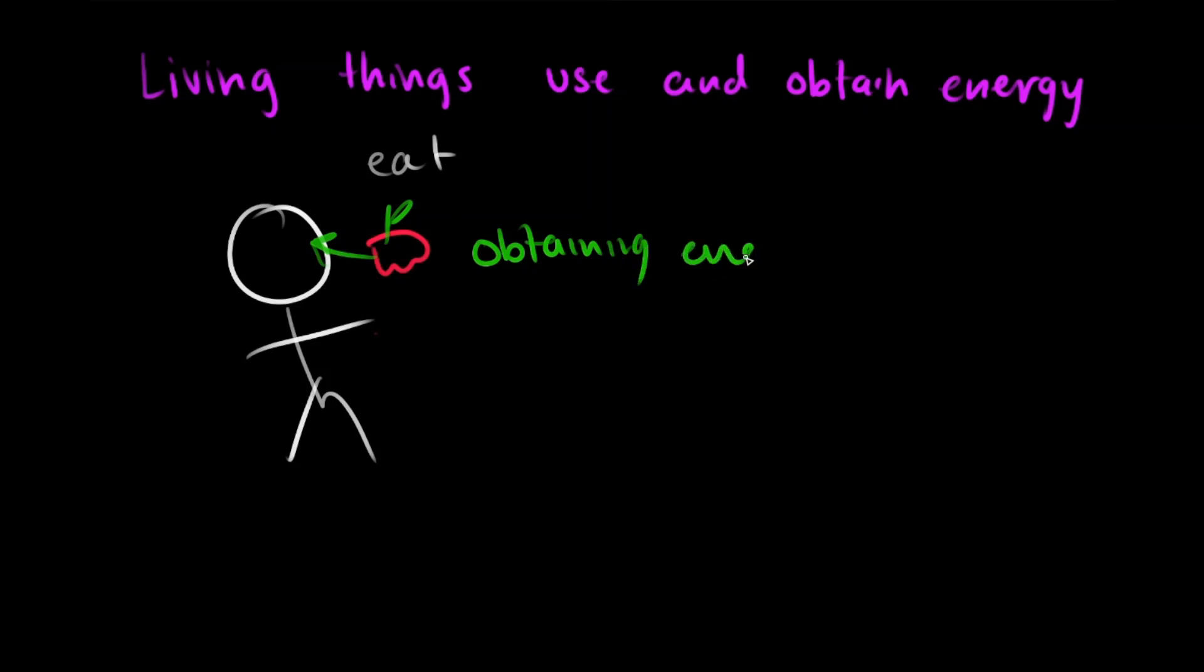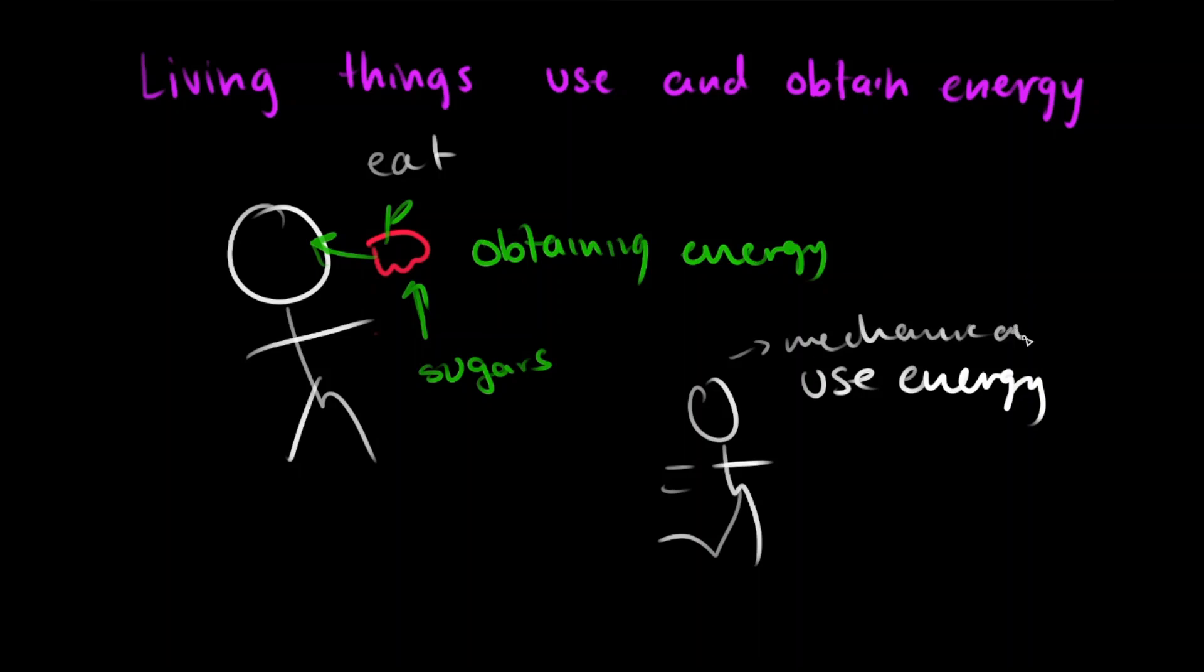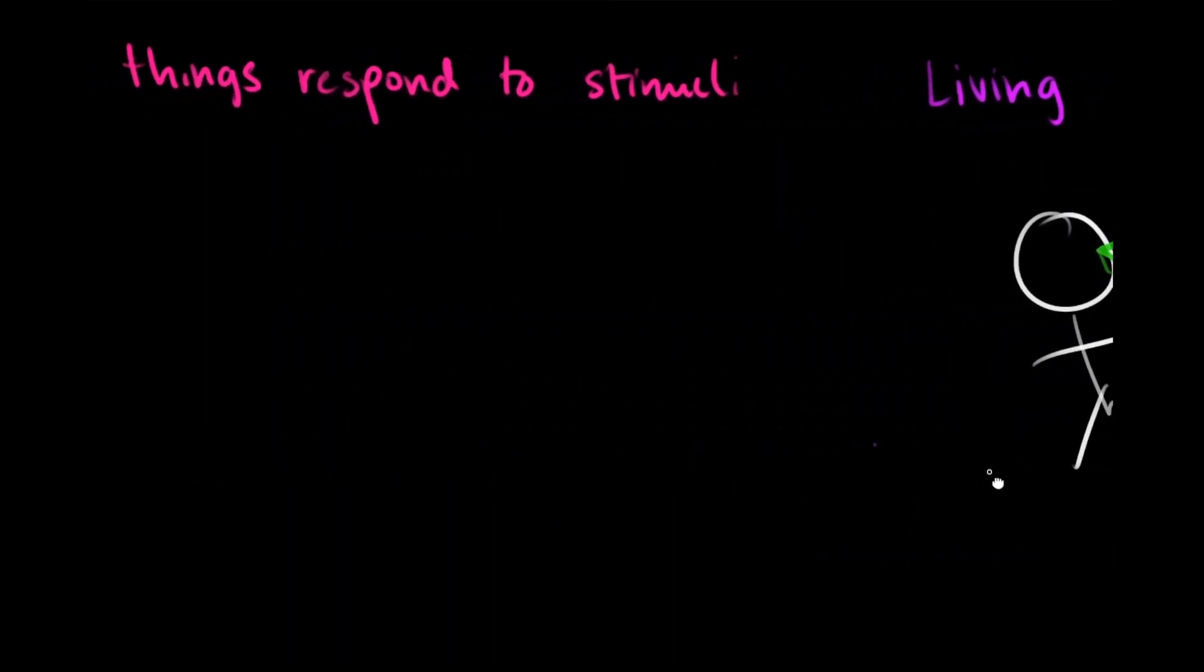But it's not only sugars, other artificial sweeteners can also give us a boost of energy as well, even if it's short-term. But even as we obtain energy, we use energy as well. When we walk or run, we use energy. In this case, it's mechanical energy. And even when we sleep, our brain needs energy to function, making the need to obtain energy, as well as use it, extremely vital to our human body.